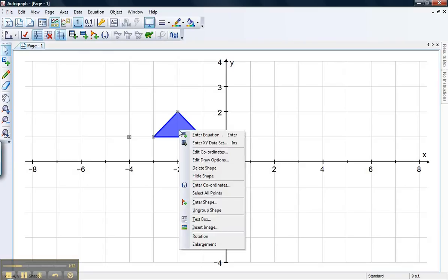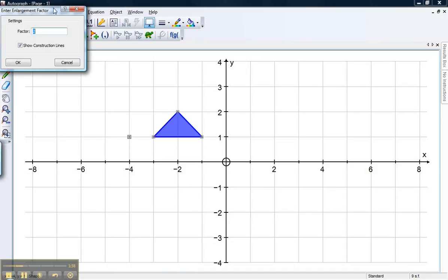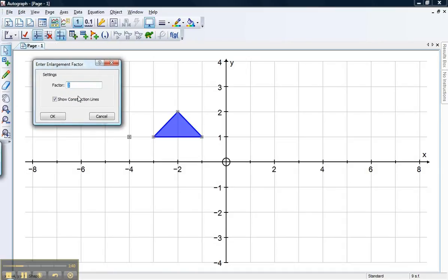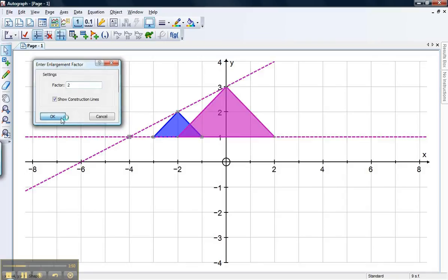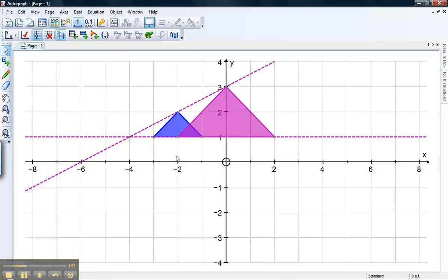OK, let's right click, and then one of the options I've got there, right at the bottom, is enlargement. Now with Autograph you get to choose your scale factor, so I think I'll go scale factor 2, that sounds good. I tend to leave the construction lines on, on enlargement, whereas I don't on rotation, because I think they do a better job on enlargement. So let's have a look, click OK, and lo and behold there's our enlarged object.